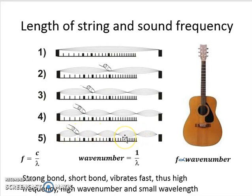The same applies to our bonds. If we have a strong bond, we have a short bond. A short bond vibrates faster. We use infrared spectroscopy to look at these vibrations, so if a bond vibrates faster, it has a higher frequency and a higher wavenumber as observed by infrared.